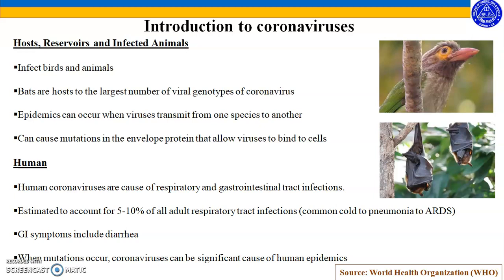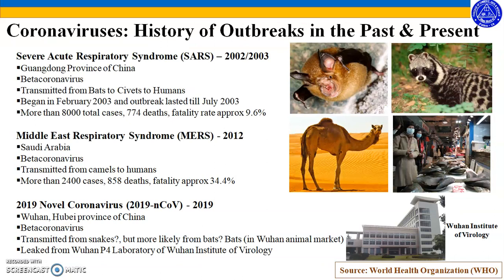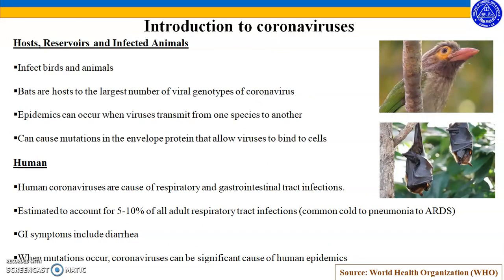As of now, there are 1.8 million cases of Wuhan coronavirus, which has surpassed SARS, though the fatality rate is luckily very low. Some coronaviruses can also cause gastrointestinal infections, with common symptoms including diarrhea. When mutations occur in coronaviruses, it can be a significant cause of human epidemics. These mutations often occur when viruses are transmitted from one species to another, and entirely new viruses can emerge through these mutations, as we have seen in recent outbreaks.